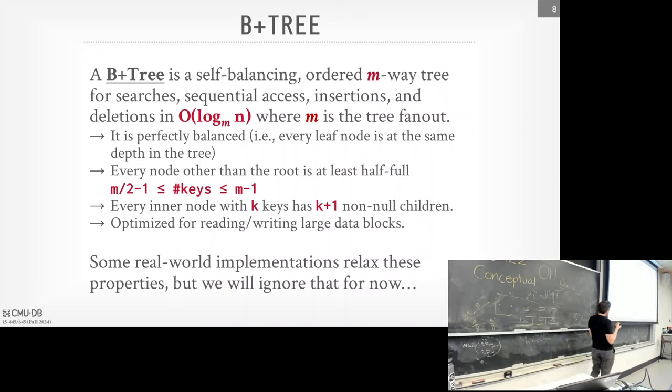We only borrow from immediately adjacent siblings — not from across the tree — because it would be expensive and you'd have to hold more latches. Different systems have different merge strategies (merge left vs. right, steal left vs. right), but the high-level protocol is the same. You want to be in and out of the tree as quickly as possible since you're holding latches while inside the data structure.